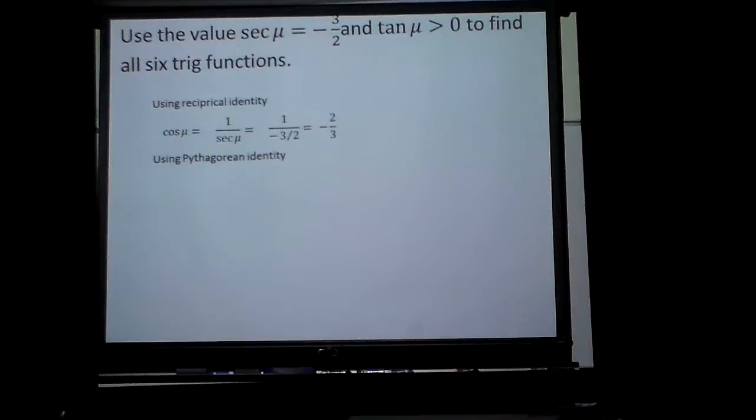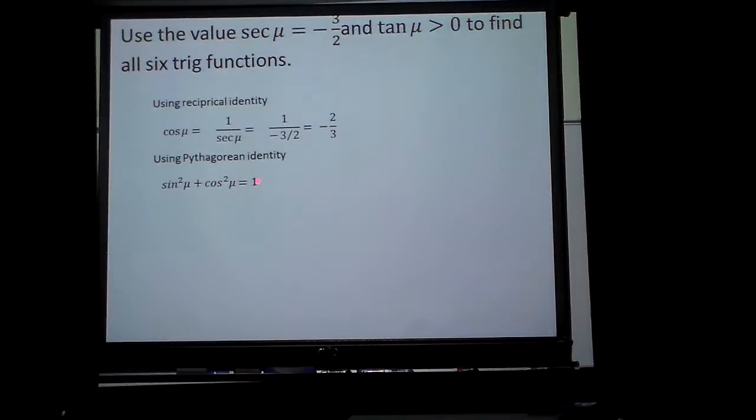I'm going to use the Pythagorean identity now to find sine. Sine squared plus cosine squared is 1. What would happen if I minus the cosine squared from each side? That one would cancel, and I would have this.